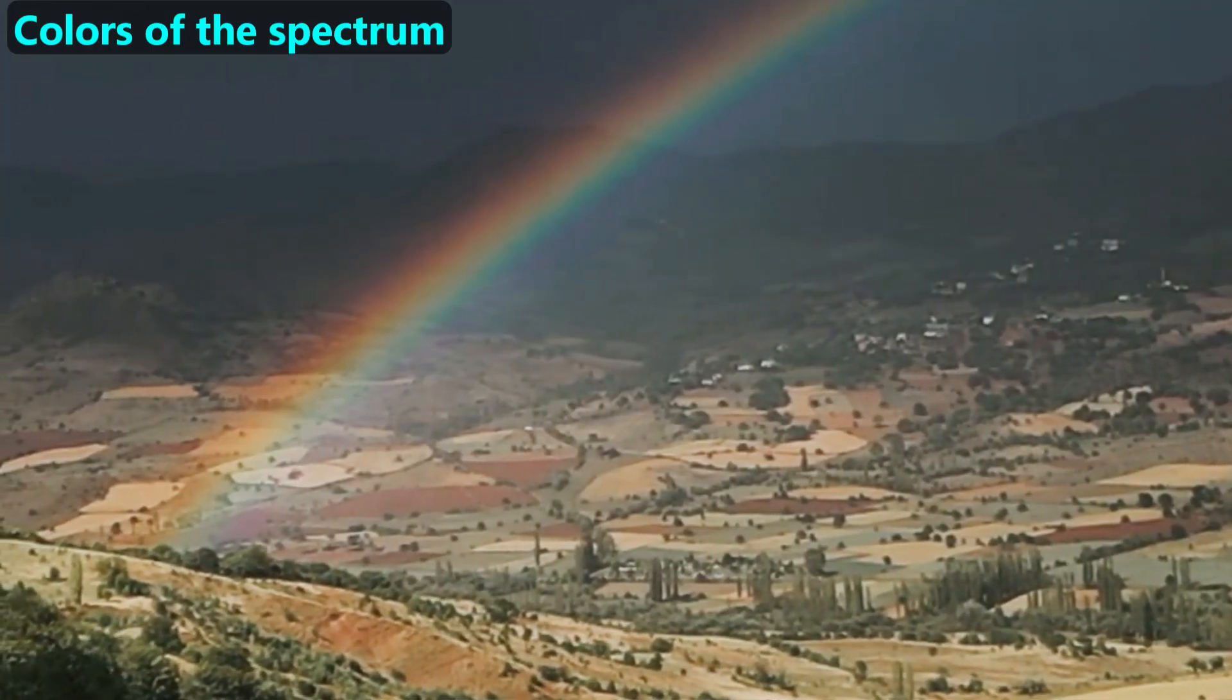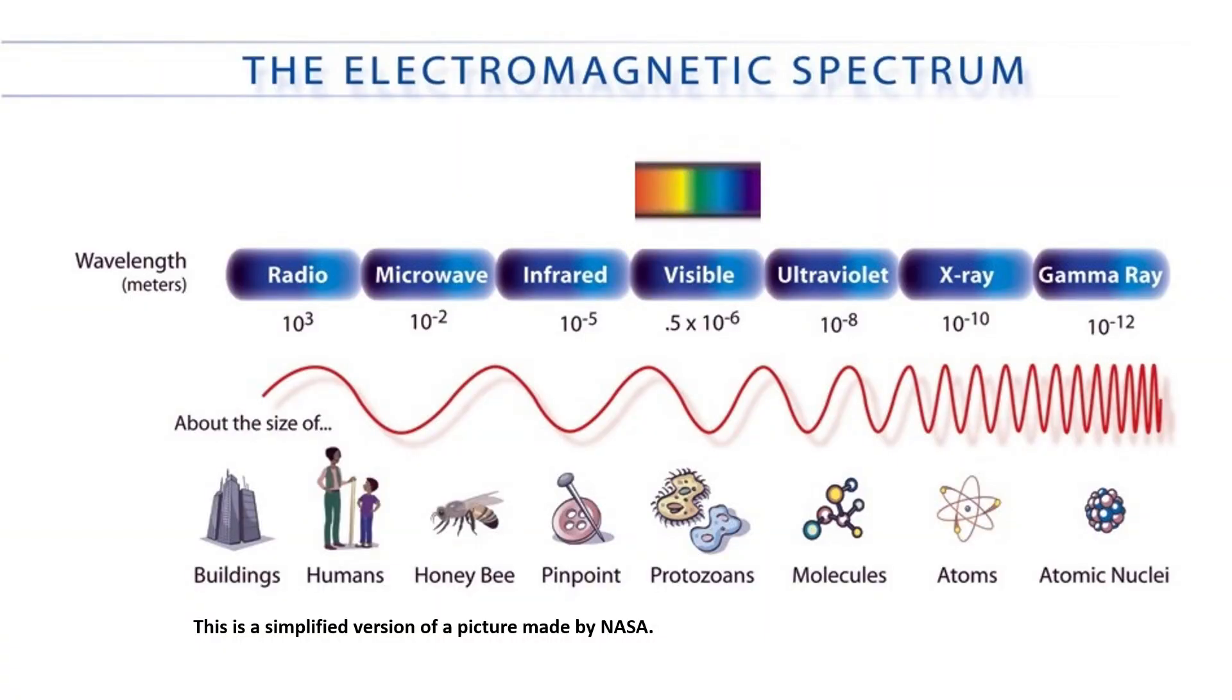Next, we'll introduce the full colors of the light spectrum. In the prior video, we learned that visible light is part of the electromagnetic spectrum. And like all forms of electromagnetic radiation, visible light has a range of wavelengths.